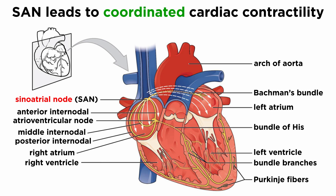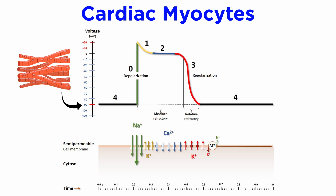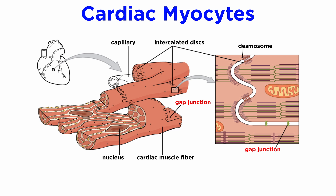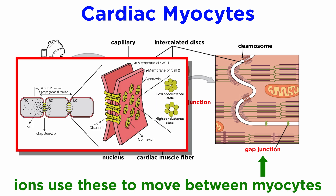Now we will consider how the electrical activity of the SAN permeates the heart and leads to coordinated cardiac contractility. In a basal state, cardiac myocytes use ATP to exchange sodium and calcium efflux with potassium influx. Since the myocytes are losing more positive charge through dual calcium and sodium efflux than is gained from potassium ion influx, the myocyte is hyperpolarized at a baseline of around negative 90 millivolts. However, cardiac myocytes have specialized structures called gap junctions, which allow ions to move from one myocyte to the next, propagating electrical continuity between the whole heart. Changes in the SAN cell's potential difference influence the membrane potential of neighboring cells through movement of cations from SAN cells to nearby myocytes through these gap junctions.